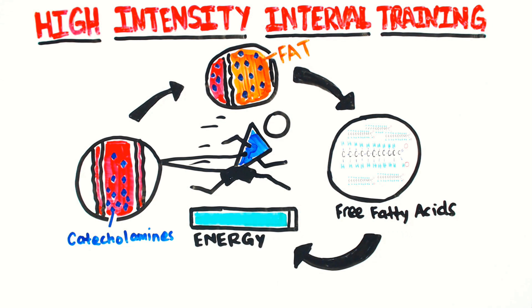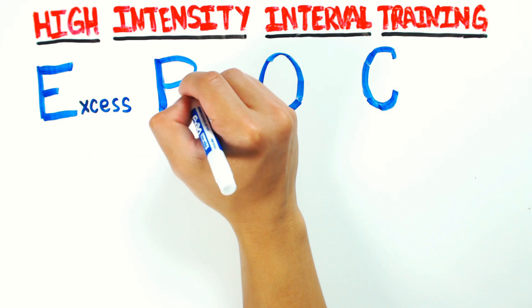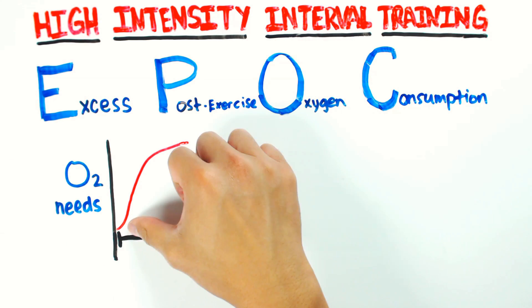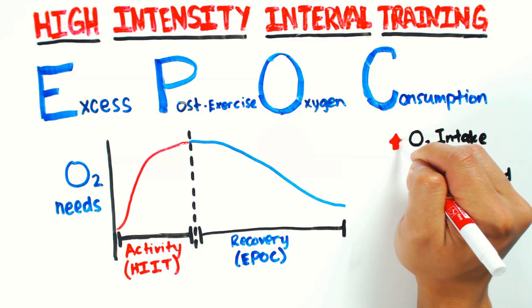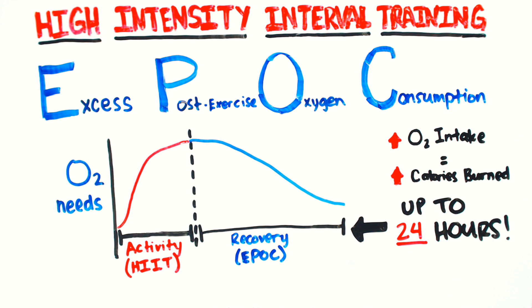Free fatty acids are then used to replenish these energy stores. Studies have shown that HIIT also creates a strong EPOC effect. EPOC, short for Excess Post-Exercise Oxygen Consumption, is the extra oxygen your body needs in order to recover after an intense activity. The more oxygen you take in also means the more calories are being burned. This effect can last up to an amazing 24 hours after workout.